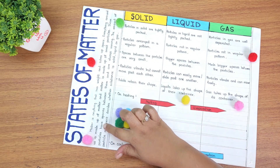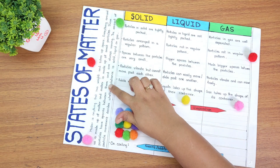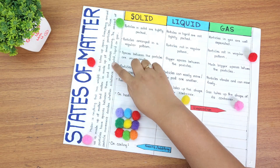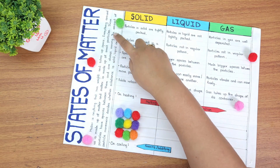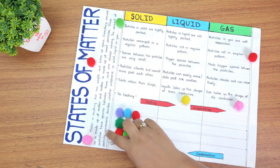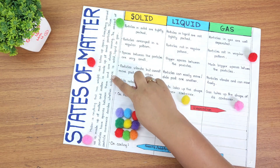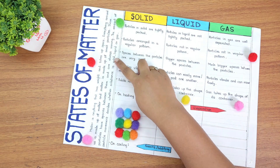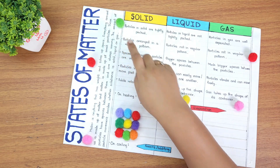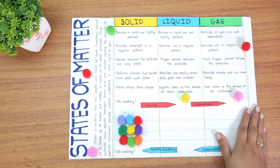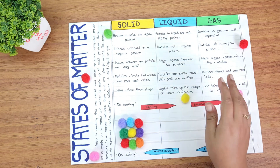These particles have spaces between them and are always moving. The amount of particle movement decides whether the substance is solid, liquid, or gas. So, let's come to the differentiating points.